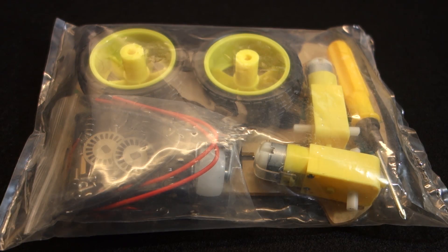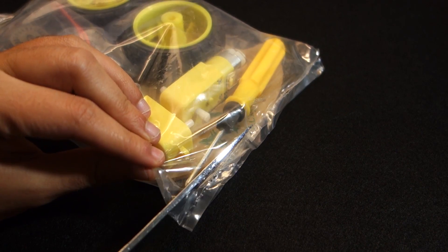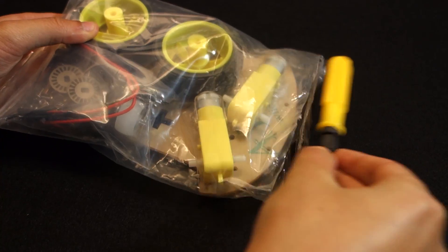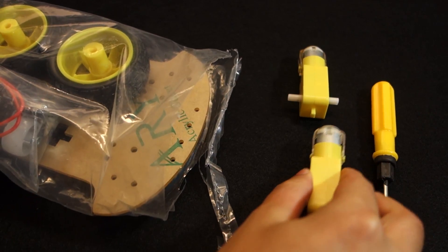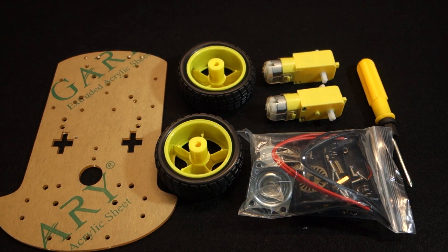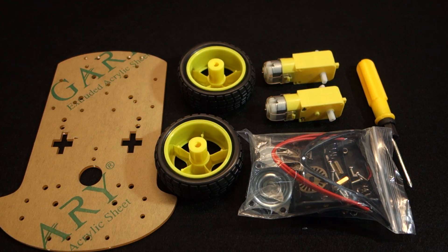This is the package that you get when you buy the kit. Open the package. It comes with one screwdriver, two DC motors, two wheels and one acrylic car chassis.